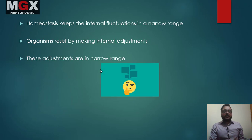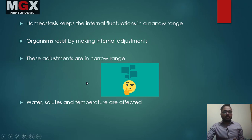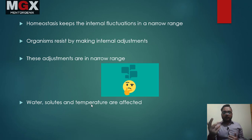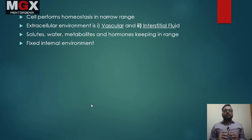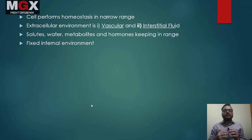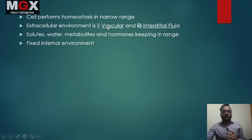The question is: which things are in the internal environment? There are three things — water, solutes, and temperature — which are affected by changes in the outer environment. These are kept in a very narrow range. There is an intracellular environment inside the cell and an extracellular environment outside the cell, which includes the vascular system and interstitial fluid.